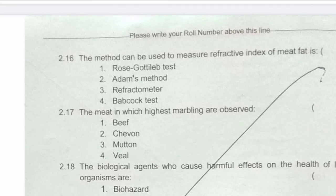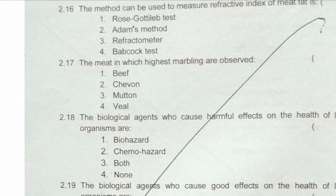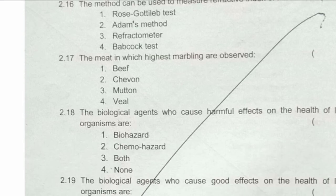Next question: the method used to measure the refractive index of meat fat — we use the third option, refractometer, so the answer is third. Next question: the meat in which highest marbling is observed — the answer is the first option, beef, which shows the highest marbling of fat.